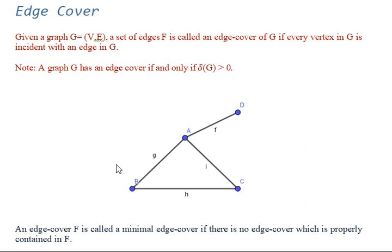Hello friends, in this tutorial we will talk about basics of edge cover, minimal edge cover, and edge covering number. Let's start with the definition of edge cover. Given a graph G=(V,E), a set of edges F is called an edge cover of G if every vertex in G is incident with an edge in G.